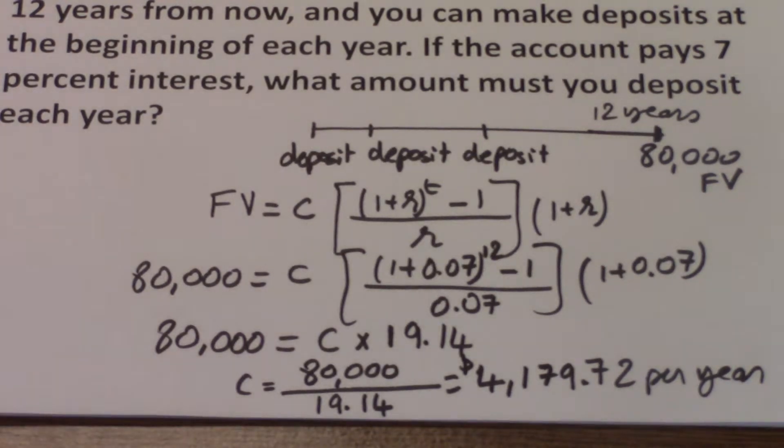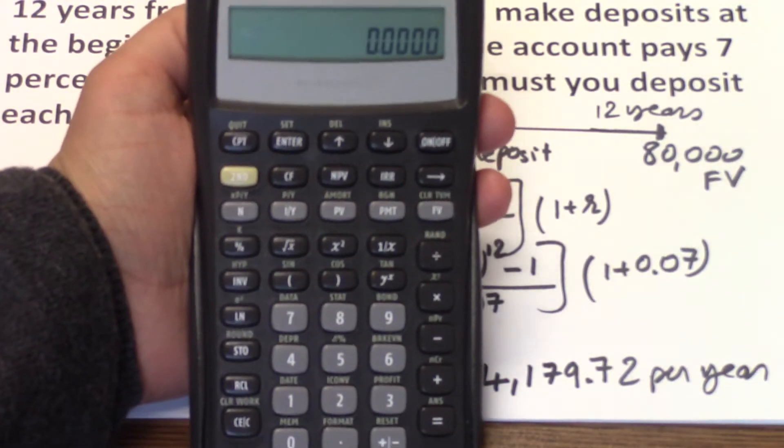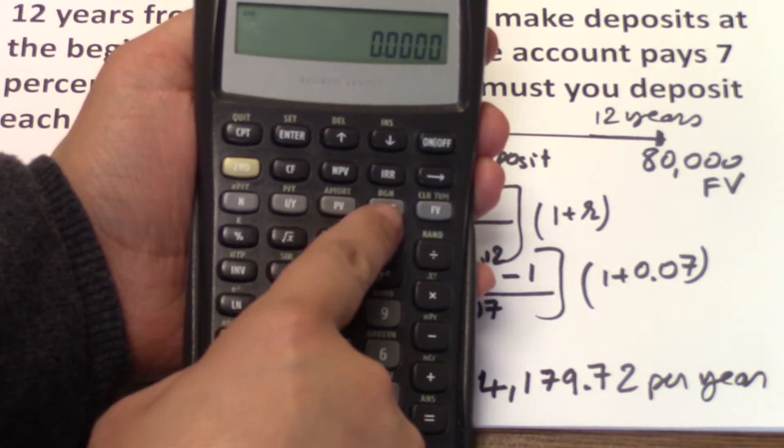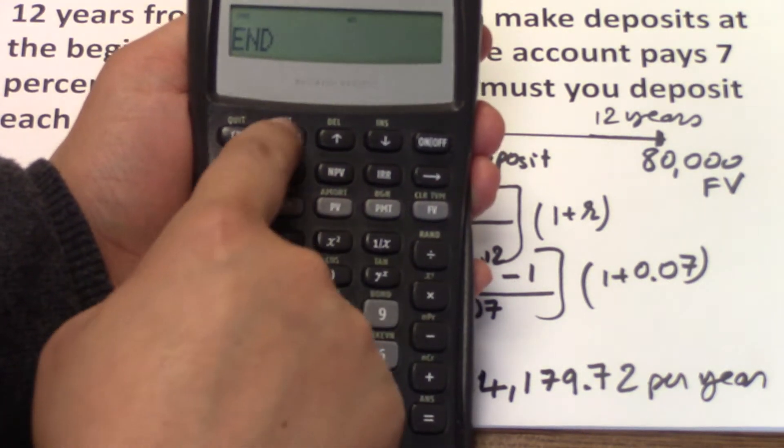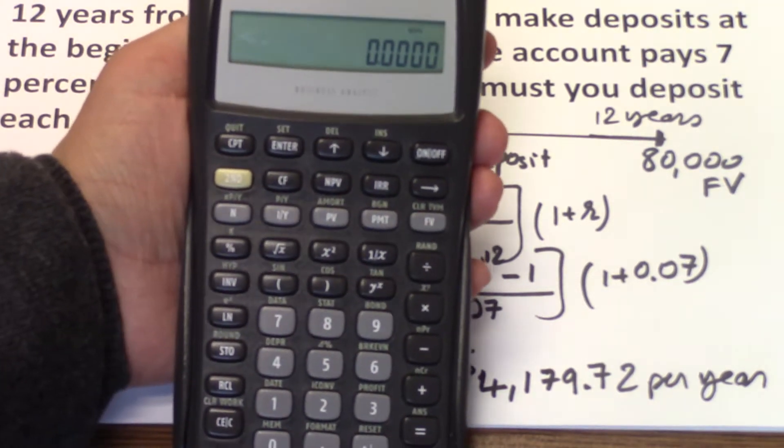To get this through the financial calculator, you need to set the calculator to begin mode and then input your variables. So what you need to do here is second PMT, second enter. You will see BGN. That means the calculator is set to begin mode.